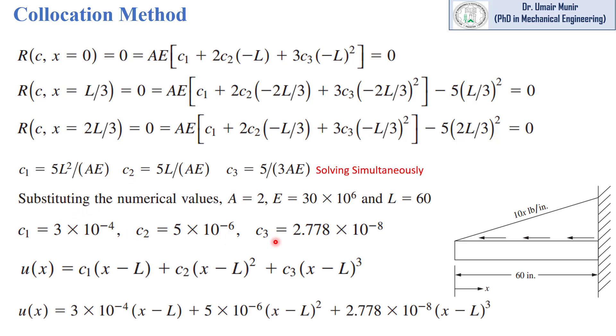This was the displacement function which was assumed in the previous lecture of weighted residual method. By putting in the values of these coefficients c1, c2, and c3, we will get the axial displacement function. With the help of this axial displacement function, we can find out the value of u at any point of the rod.